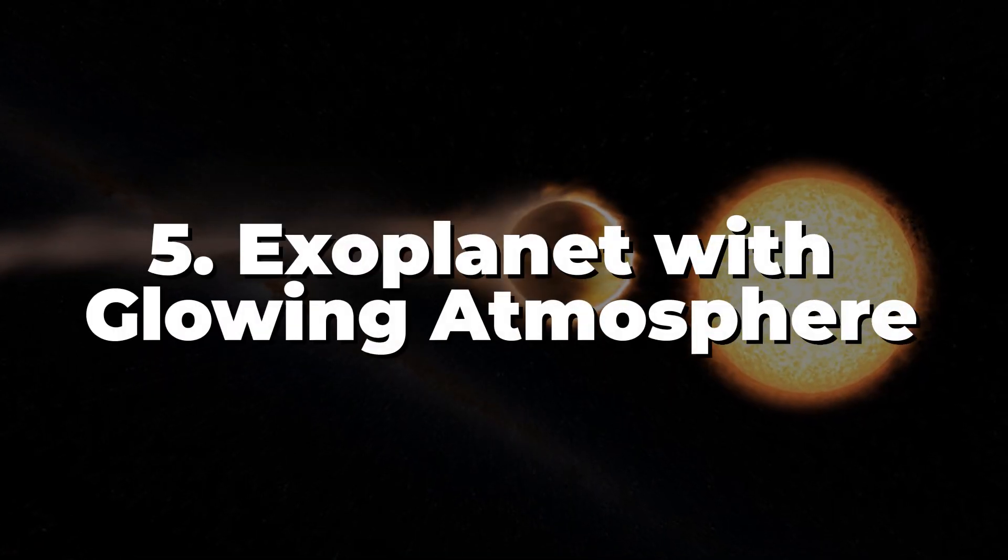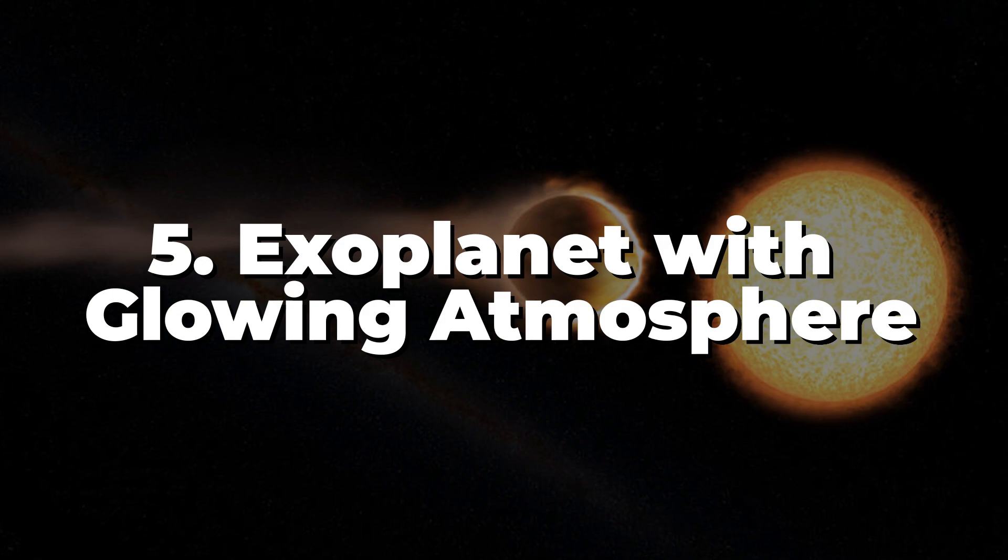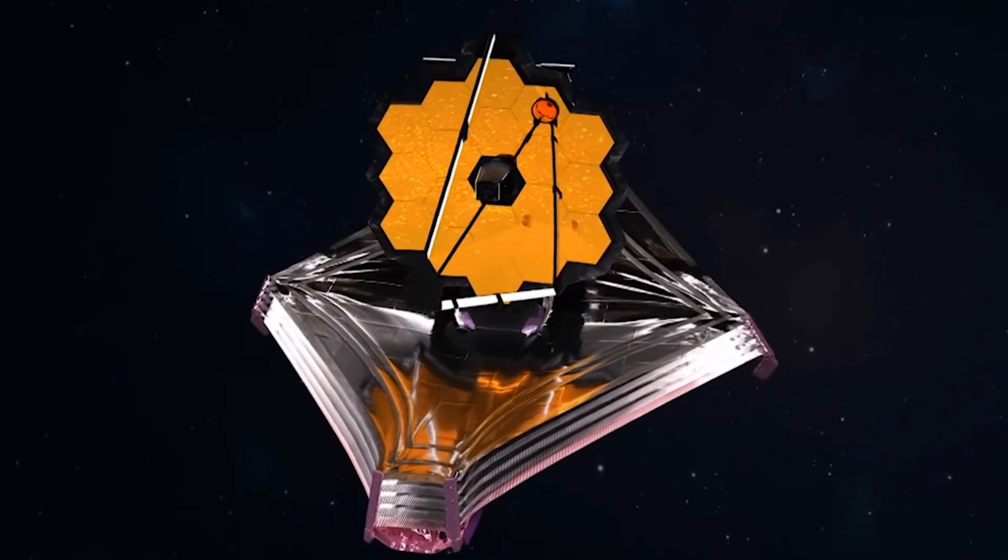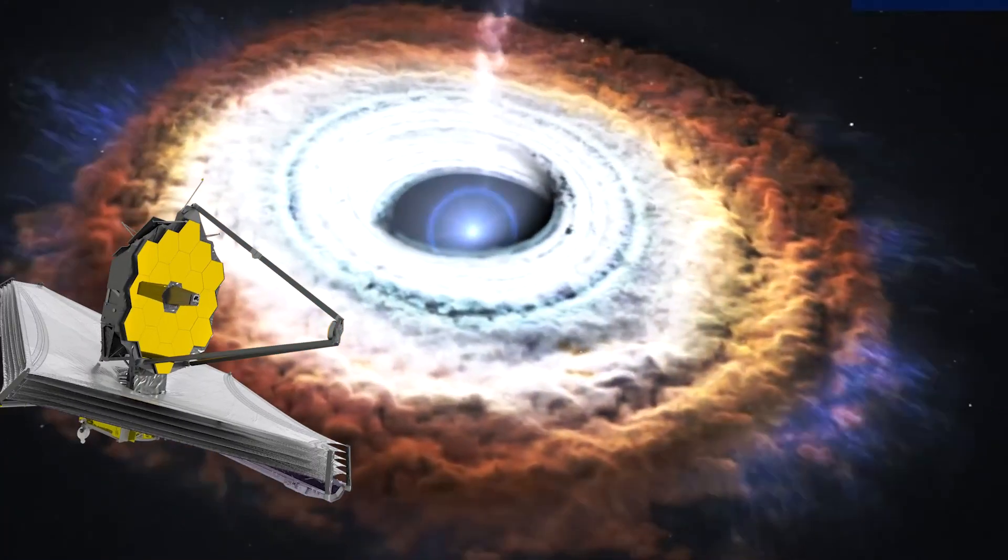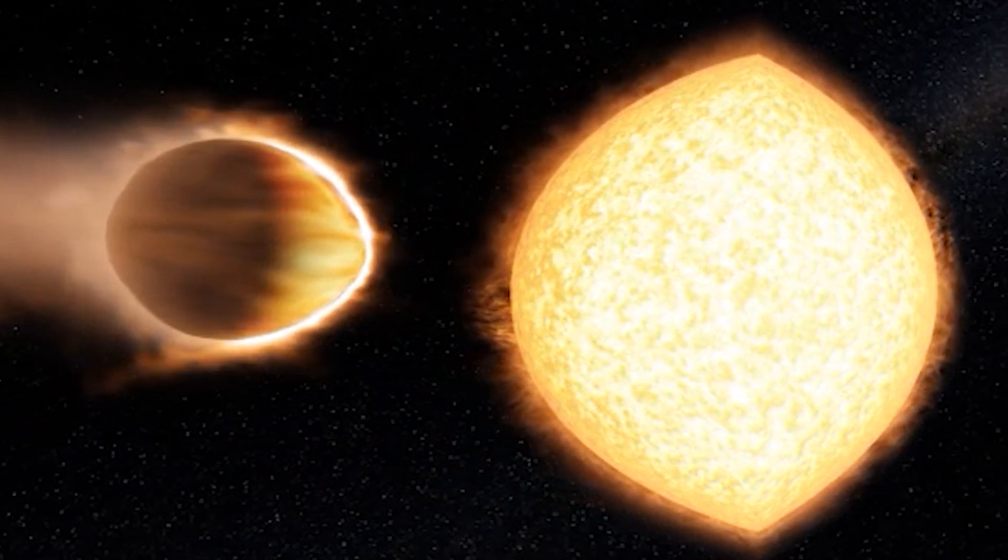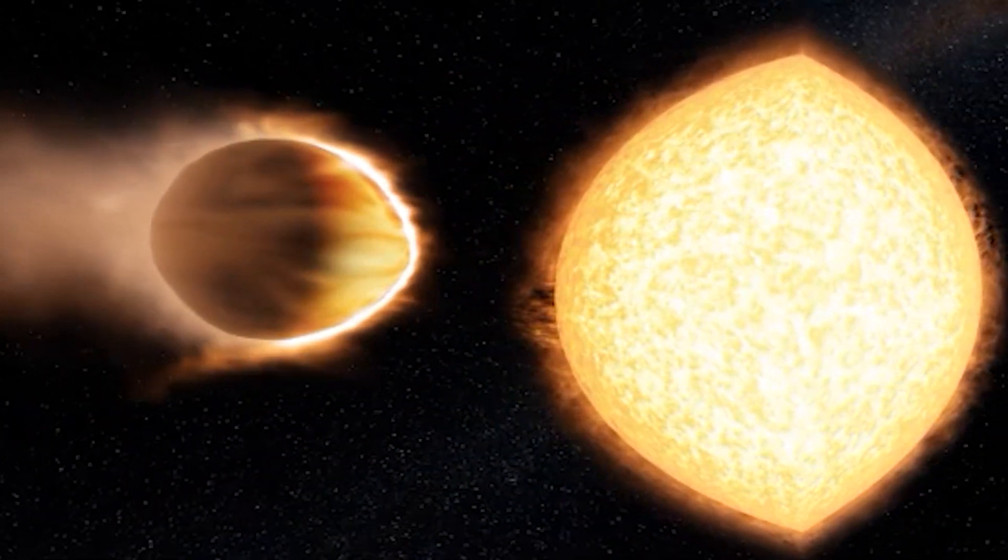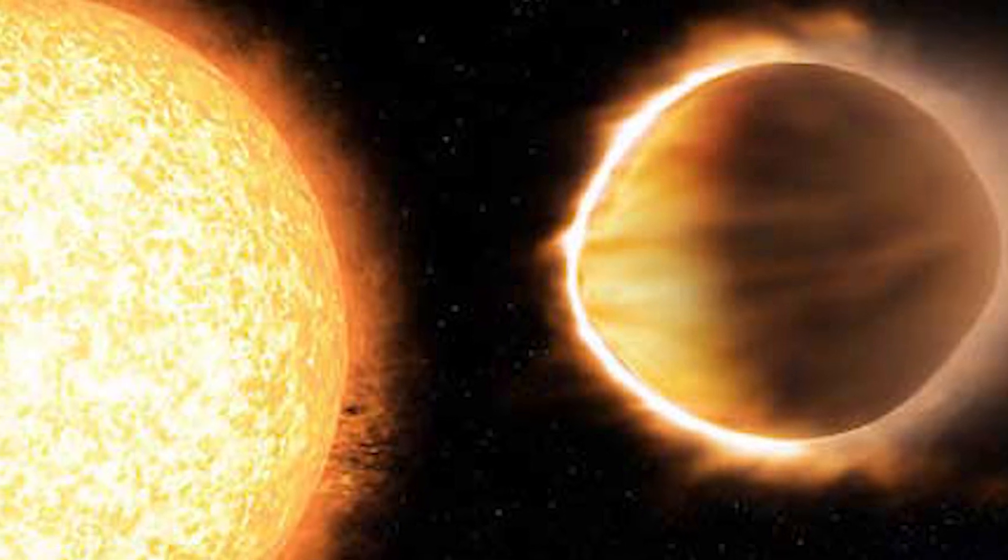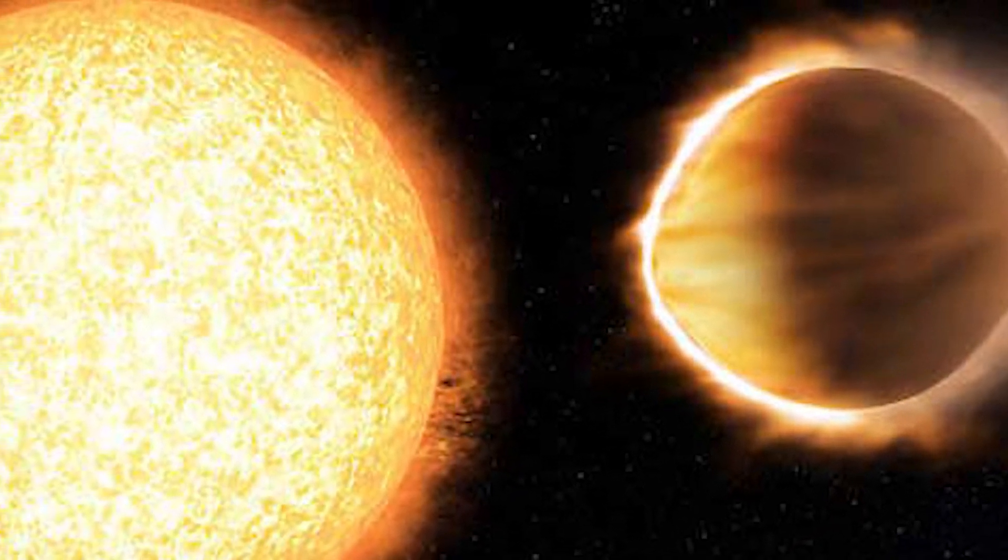Number 5. Exoplanet with glowing atmosphere. The JWST made history by being the first astronomical instrument to photograph an exoplanet's luminous atmosphere. Due to its unusual atmospheric conditions and unique chemical compositions, this far-off exoplanet in a distant star system has a remarkable and brilliant orange color.